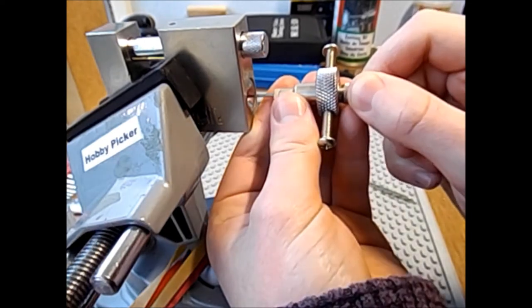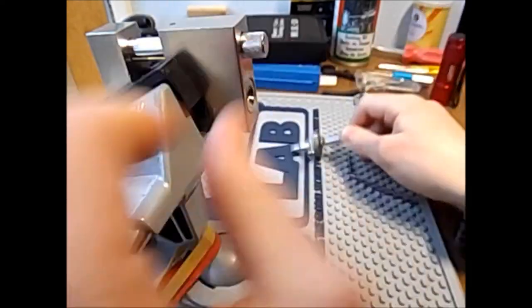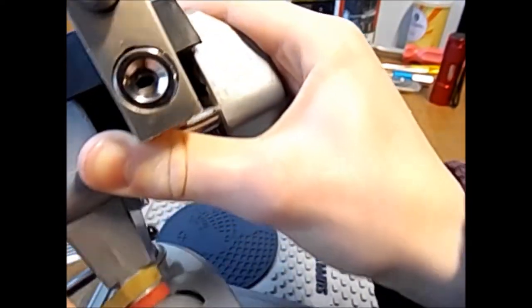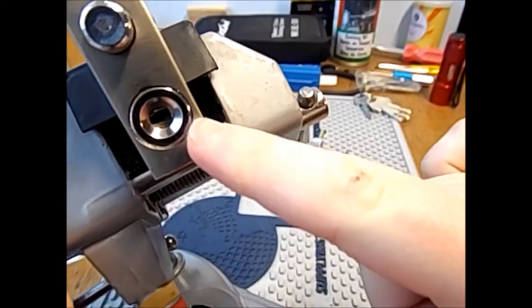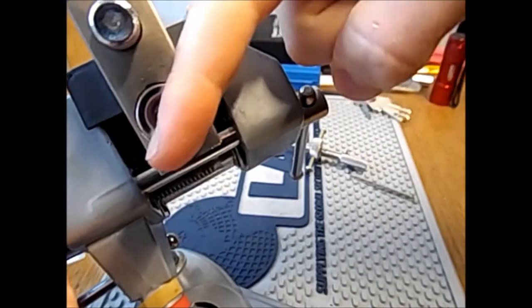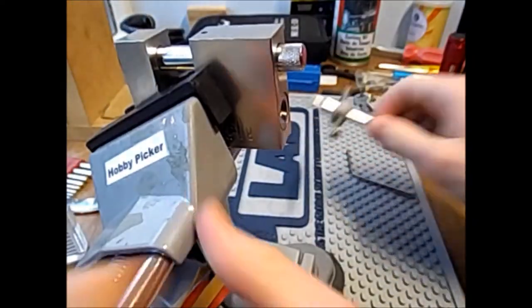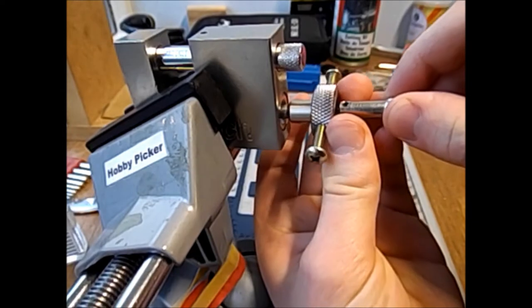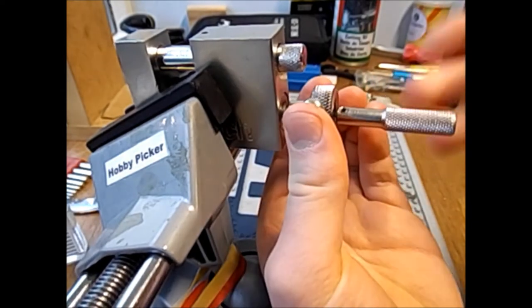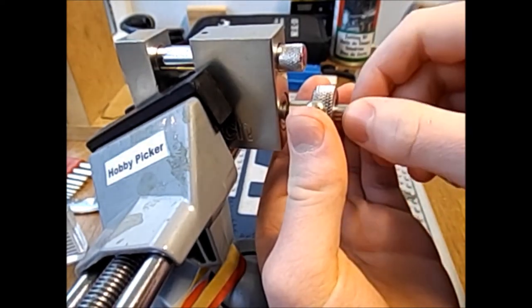You can just about see that the second disk there has been rotated this way, so it's at a slight angle. That means that when I do put my pick in here, I'm not tensioning both disks. So I'm going to stick my pick right to the back, pull back on the last disk which is set.